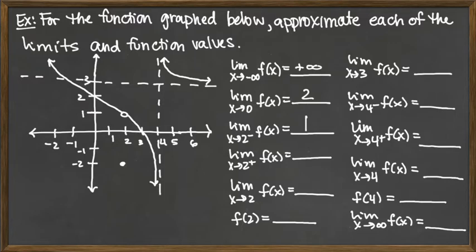The limit as x goes to 2 from the positive side — approaching from the right-hand side of 2 — we're again approaching that hole at the y value of 1. So the right-hand limit is also 1. Since the right-hand limit and the left-hand limit are both 1, the full limit as x goes to 2 is also 1. The matching value is the limit value where we're not specifying the side.